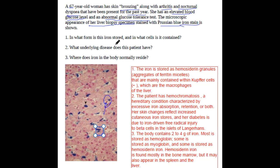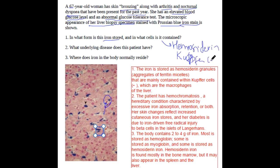In which form is this iron stored? It is stored in the form of hemosiderin granules, which are seen in the Kupffer cells, which are a type of macrophages.